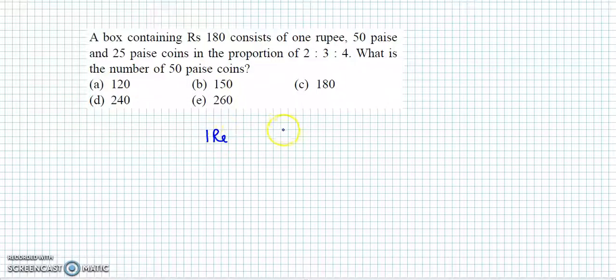rupee coin hai, then 50 paise coins hai and 25 paise coins hai. Ab one rupee ko hum consider karte in paise which will be 100 paise. Ab yahaan par hum likh lete hai pehle number of coins. Ab inka ratio hume